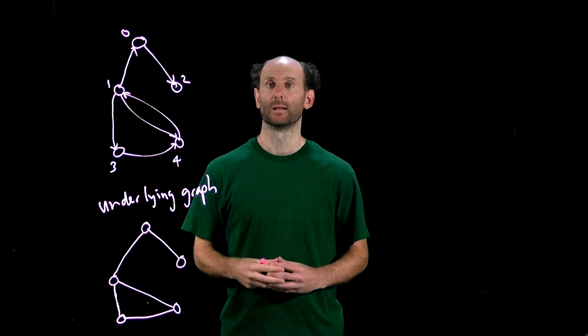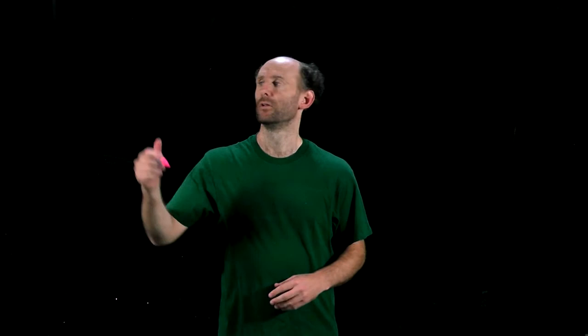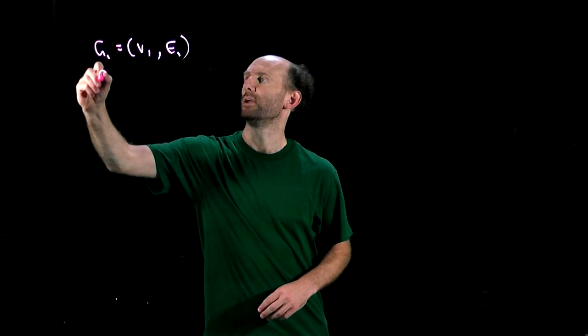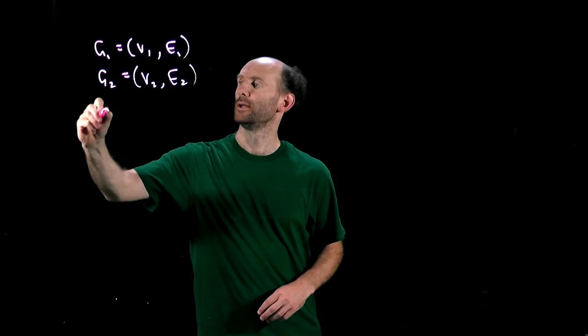Finally, the union of two or more digraphs, which are completely disjoint, is simply the union of the two nodes and arcsets. So if we have two digraphs G1 = (V1, E1) and G2 = (V2, E2), then the union is G = (V1 ∪ V2, E1 ∪ E2).